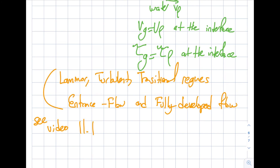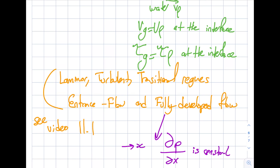An important property of fully developed flow: if the flow is in the x-direction, the velocity profile is constant in x — it doesn't change downstream. Also note that the pressure gradient ∂p/∂x will have a constant but negative value in a pipe, because pressure decreases in the flow direction.